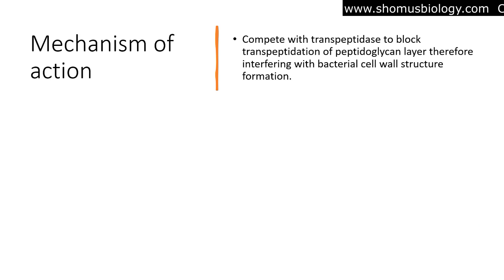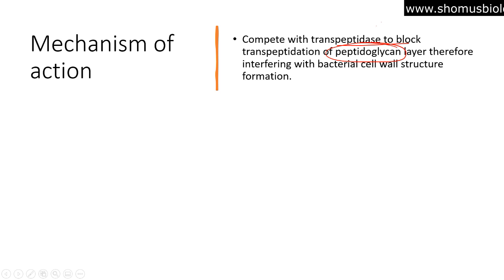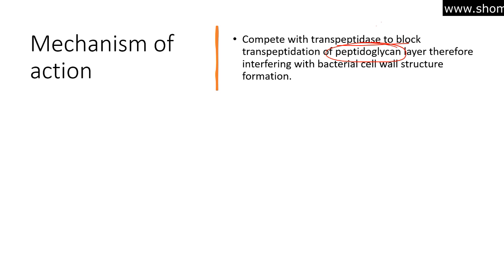Regarding mechanism of action, amoxicillin competes with transpeptidase to block the transpeptidation of the peptidoglycan layer. The peptidoglycan layer is the structure that builds the cell wall of bacteria — it is thicker in gram-positive bacteria and thinner in gram-negative bacteria.